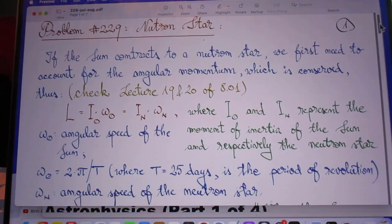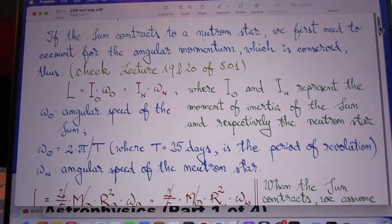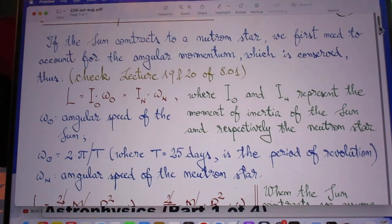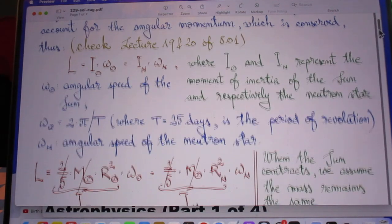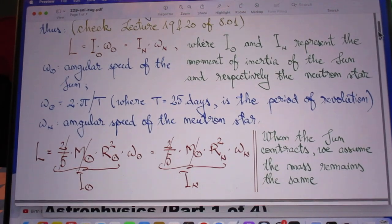If the sun contracts to a neutron star, he slipped up here on the spelling of the word neutron star. We have to account for the angular momentum, which is conserved. I cover that in lecture 19 and 20 of 801.